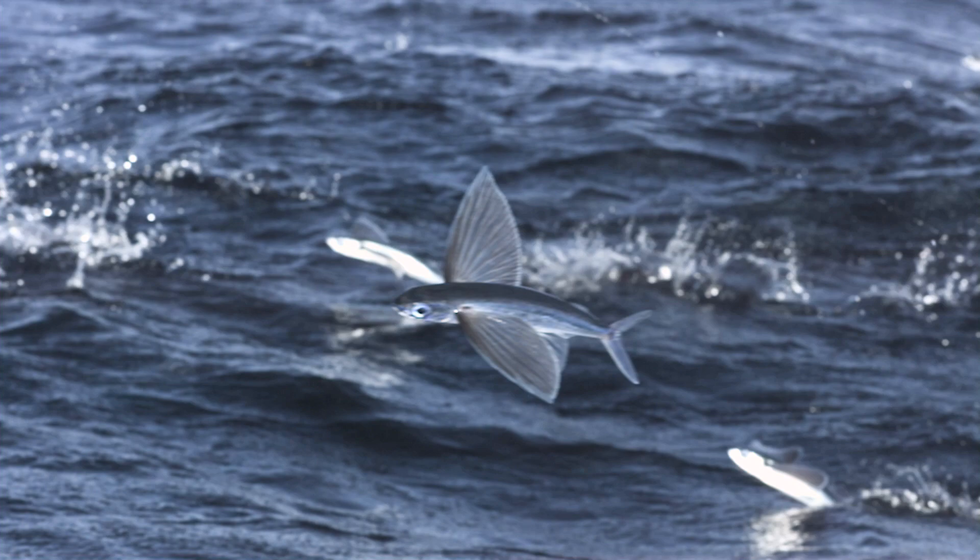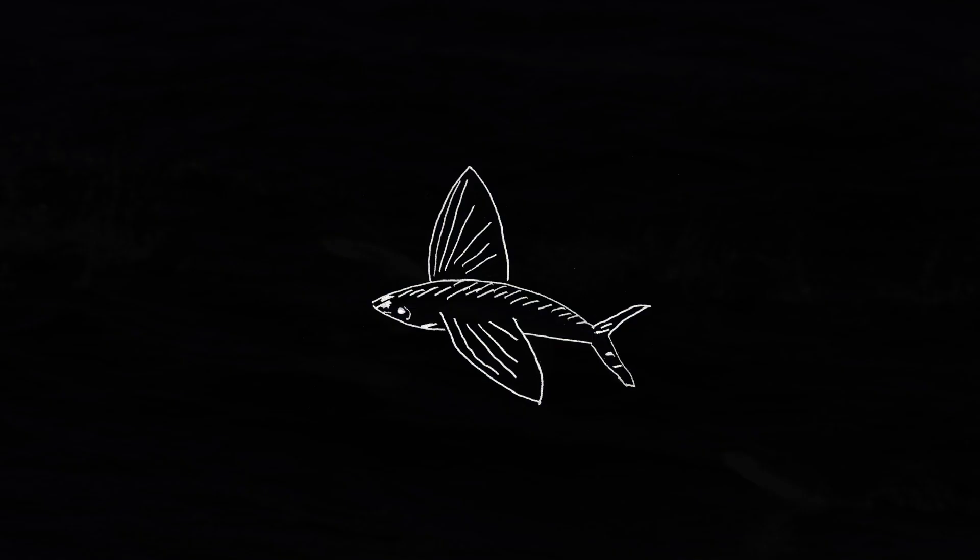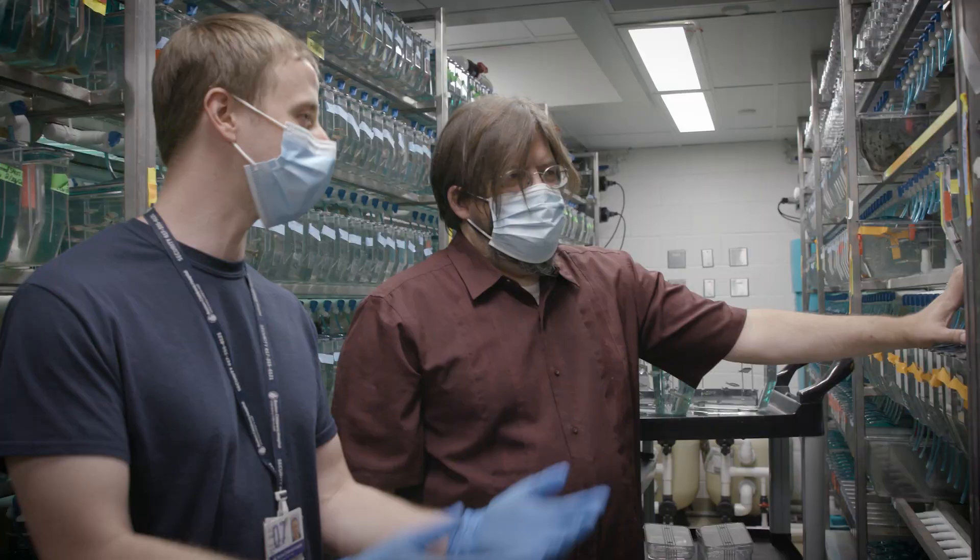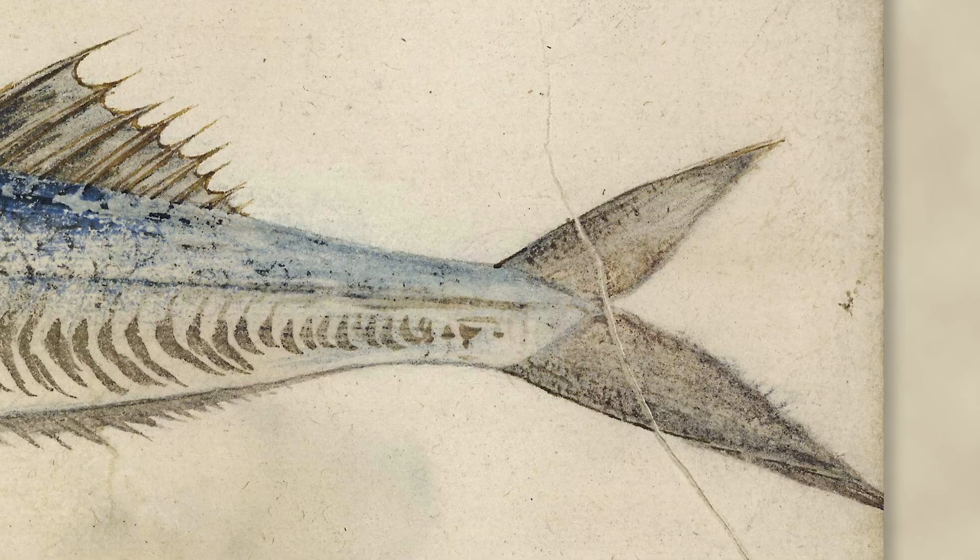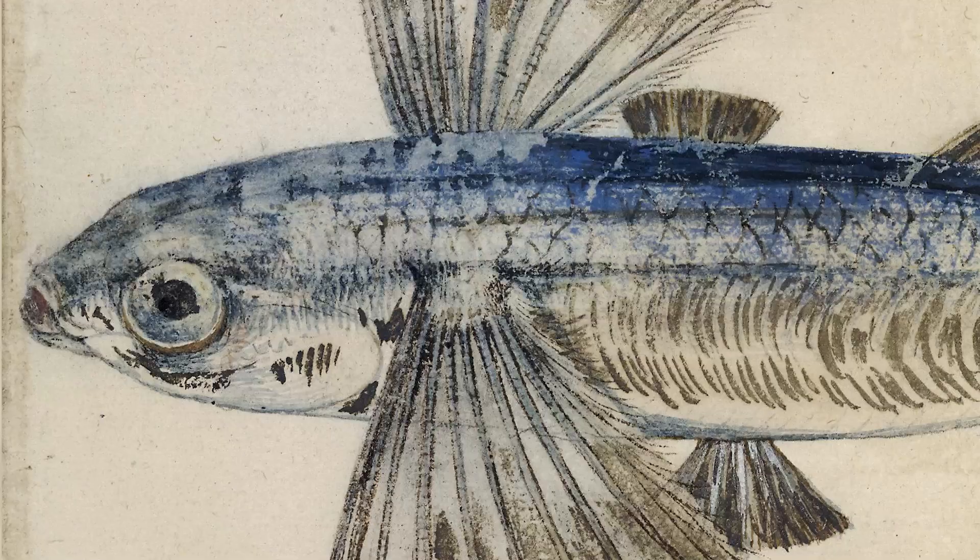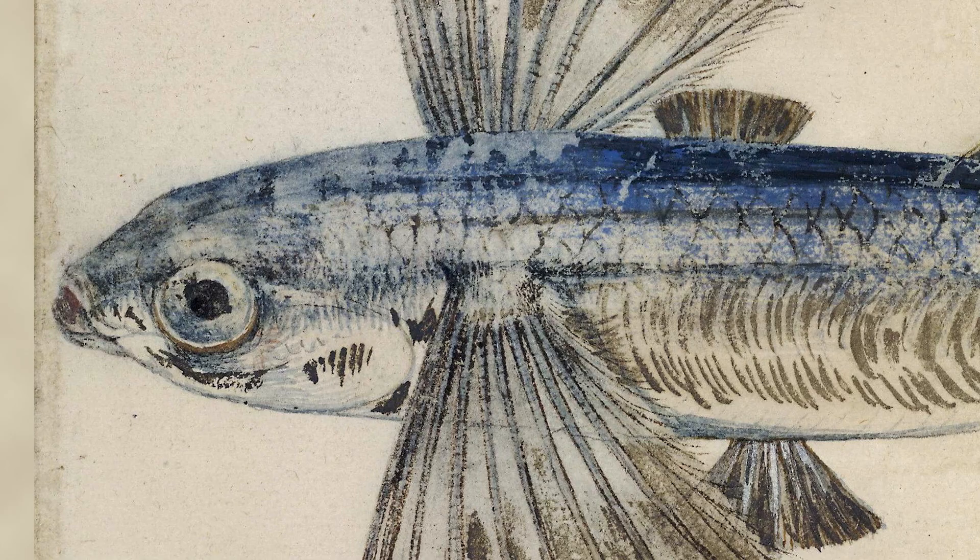Flying fishes have evolved large pectoral fins that allow them to avoid predators by flying above water. Scientists curious about how genes control the relative sizes of body parts recently looked for clues in the evolution of these wing-like fins.